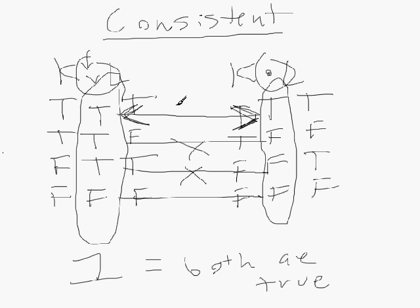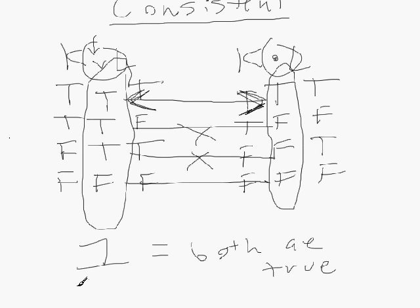On line one, both K∨L and K∧L are true — so these two statements are consistent. For example, in ordinary language: 'Either Kevin or Larry is going to the party' and 'Kevin and Larry are going to the party' — those could both be true if K and L are both true. The key is we need just one row where both are true; a row where both are false doesn't count.